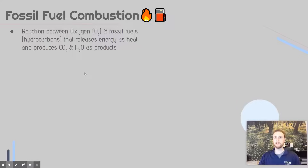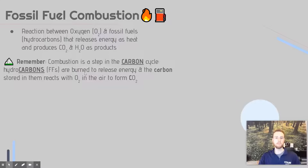We should also know that they produce carbon dioxide and water as byproducts. It's really important to remember that fossil fuel combustion is a step in the carbon cycle. If we think of it as following the carbons, it can help us understand rather than just memorize this reaction. These hydrocarbons, or fossil fuels, are burned in the presence of oxygen to release energy, and the carbon from those hydrocarbons combines with oxygen in the air — that's how we get the carbon dioxide that's released.